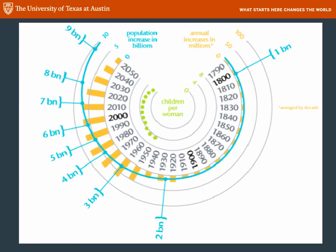This graph shows world population in real form, superimposing three different things. In gray you can see years from about 1790 to 2050 projected. In blue, the number of billions of people on Earth: human population reached 1 billion just after 1800, and it took more than 120 years before the second billion. But the third billion only took 37 years, the fourth took 15, then 13, then 12 — the fifth and sixth billion came along very, very quickly.